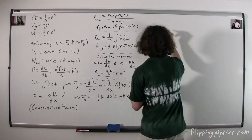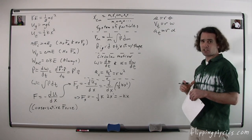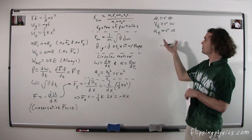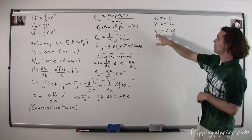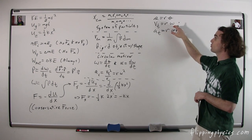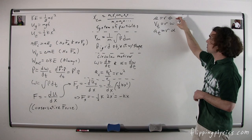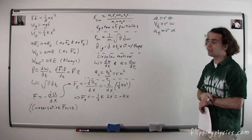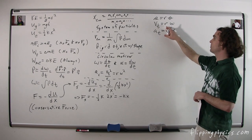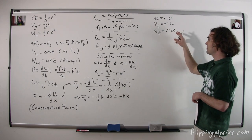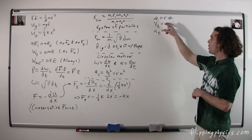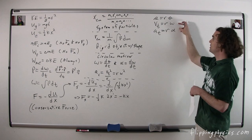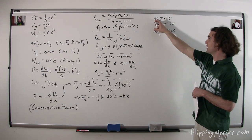The tangential velocity equals the radius times the angular velocity — that's the equation on your equation sheet. The other two are not given. If you take the integral of v_t = rω with respect to time, you get arc length s = rθ. If you take the derivative, you get tangential acceleration equals radius times angular acceleration. So by having just the one equation in the middle, you actually have all three.